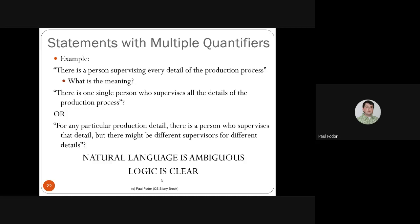Many natural language sentences have multiple quantifiers. In a supply chain example, 'there is a person supervising every detail of the production line' is ambiguous in English: it may mean one person supervises all details, or for each detail there's a person supervising it (possibly different people for different details).